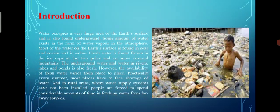Water occupies a very large area of Earth's surface and is also found underground. Some amount of water exists in the form of water vapor in the atmosphere. Most of the water on Earth's surface is found in seas and oceans and is saline. Fresh water is found frozen in the ice caps at the poles and on snow-covered mountains. The underground water and water in rivers, lakes and ponds is also fresh.